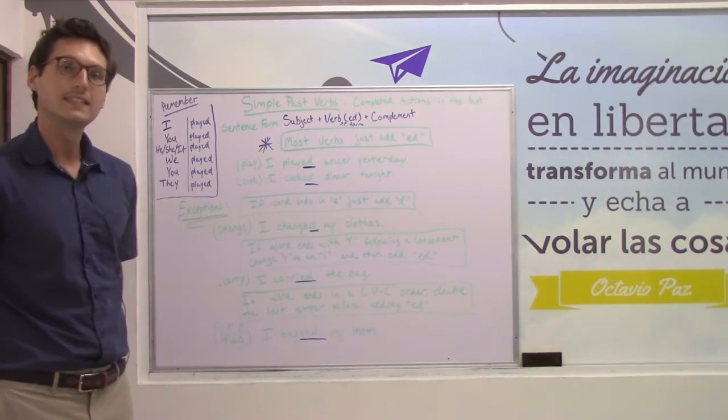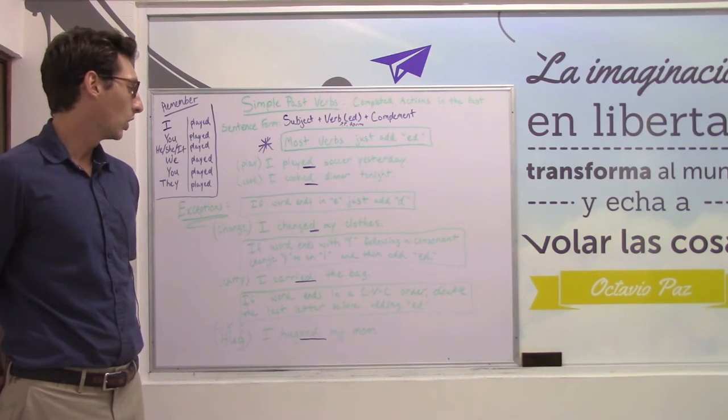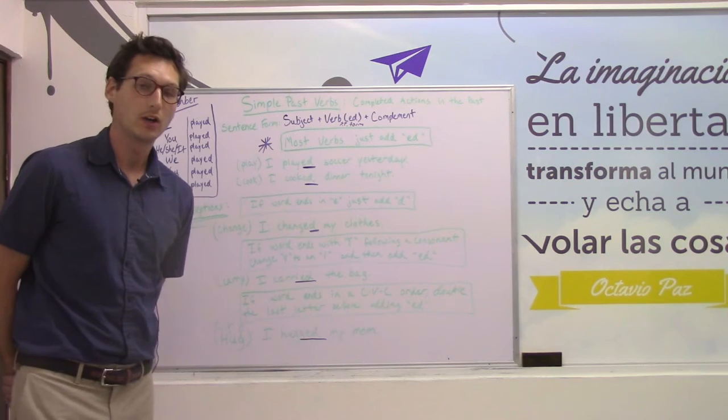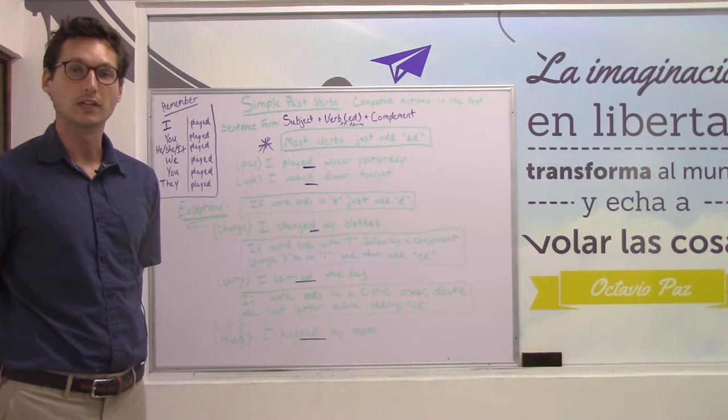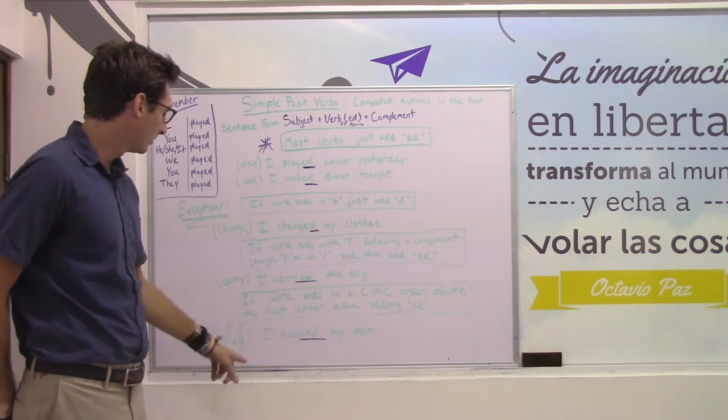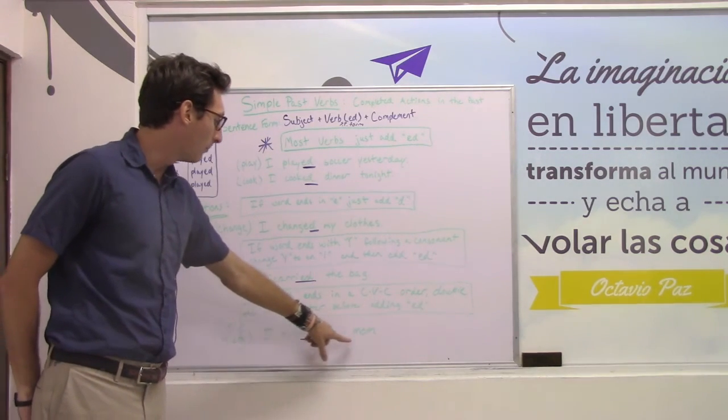Our last exception is if the word ends in a consonant, vowel, consonant order, you must double the last letter before adding 'ed'. For instance, hug - I hugged my arm.